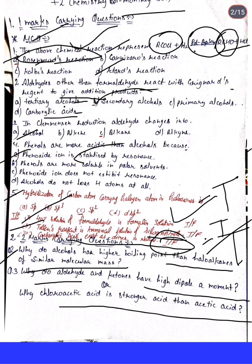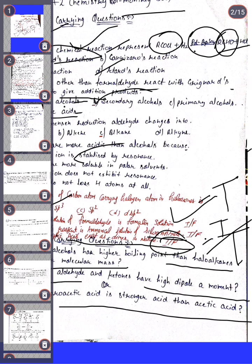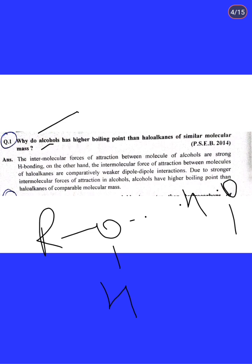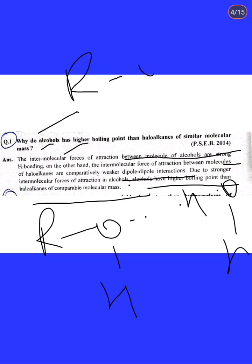Answer to Question 1: Alcohols (R-OH) show intermolecular hydrogen bonding. The intermolecular forces of attraction between alcohol molecules are stronger due to hydrogen bonding. On the other hand, the intermolecular forces of attraction between haloalkane molecules are comparatively weaker — only dipole-dipole interactions. Due to stronger intermolecular forces, alcohols have a higher boiling point than haloalkanes of comparable molecular mass.